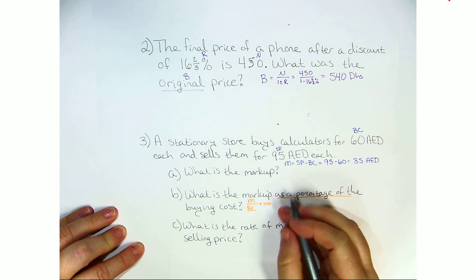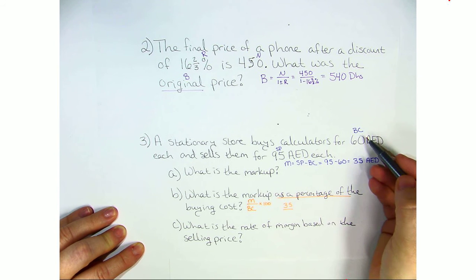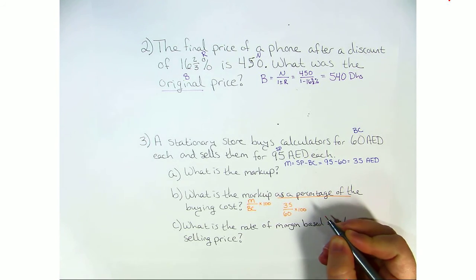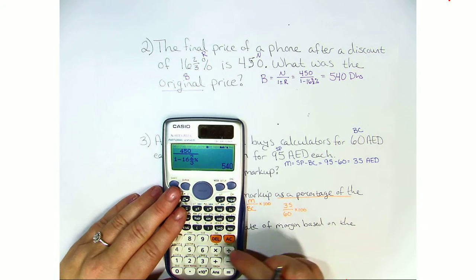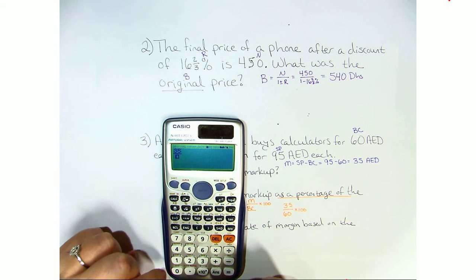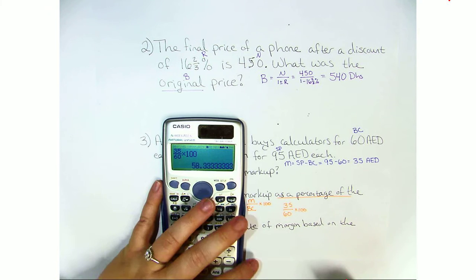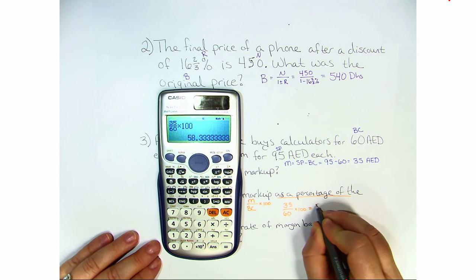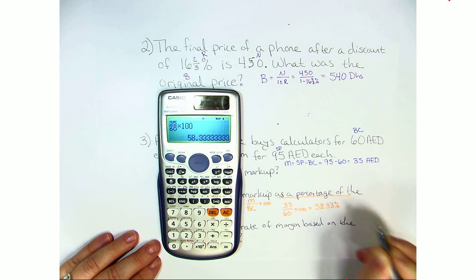Now, we found our M was 35. Our buying cost from the problem is 60 and we have to multiply by 100. So we get out our calculator, go ahead and clear it from the last one. Fraction 35 over 60 times 100. We have to hit SD to make it into a number and we get 58.33. We just have to put the percent sign to be finished.